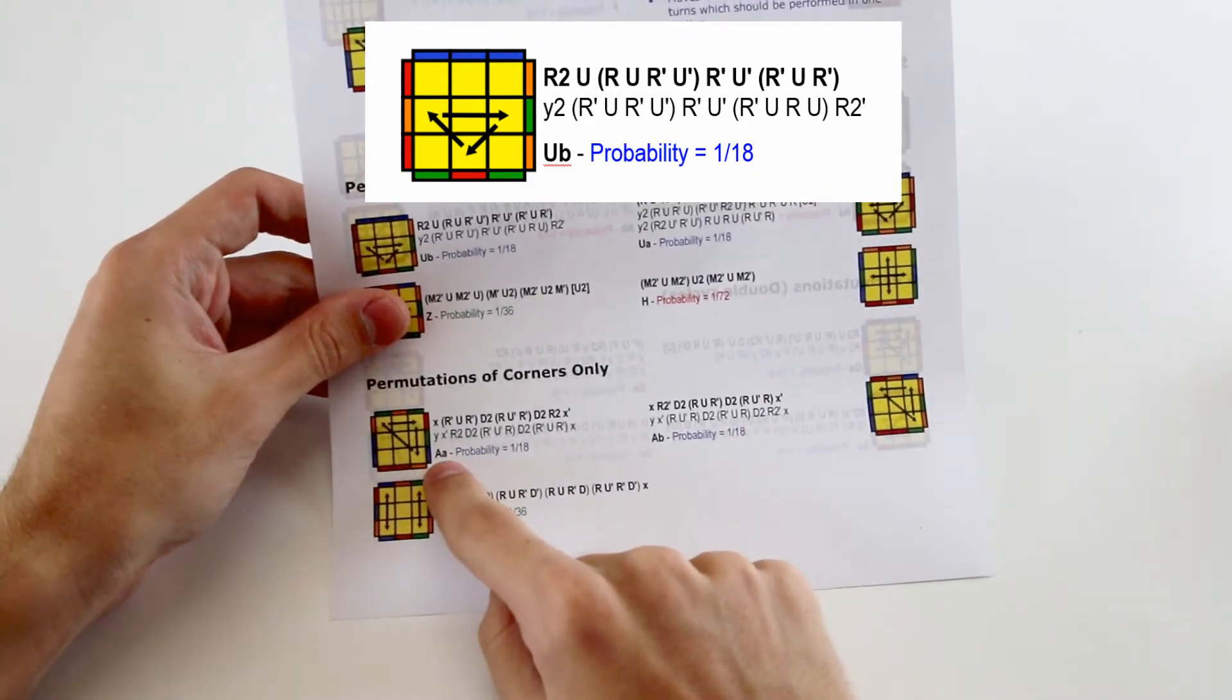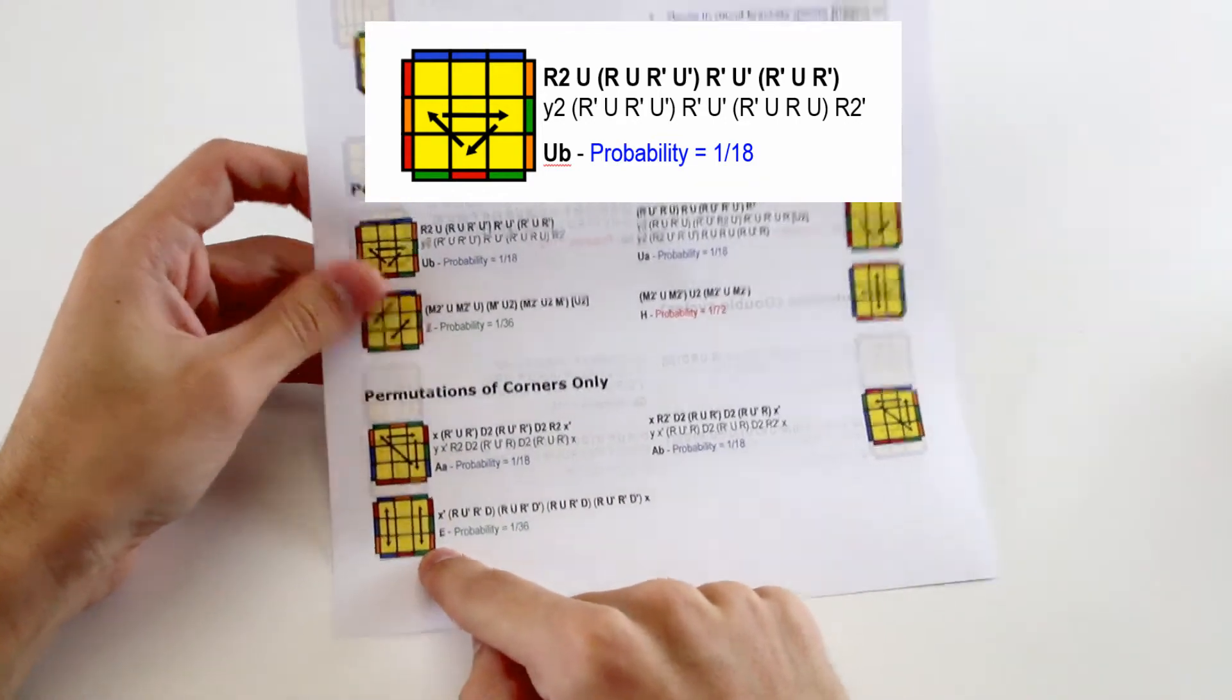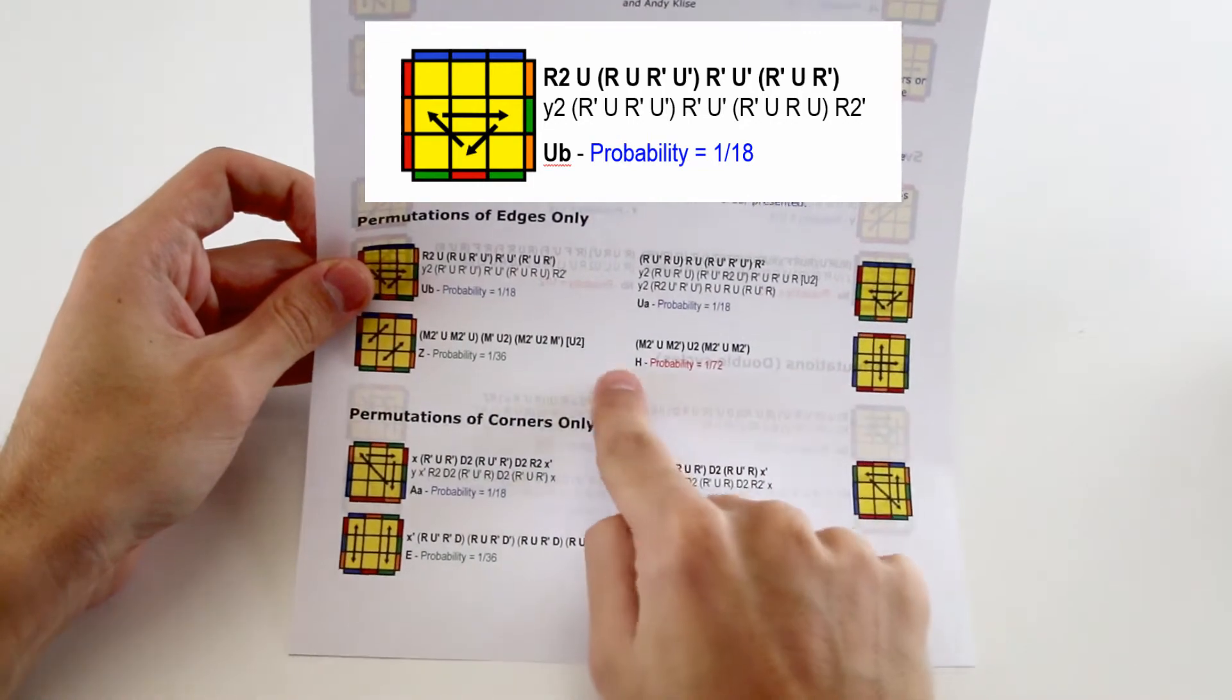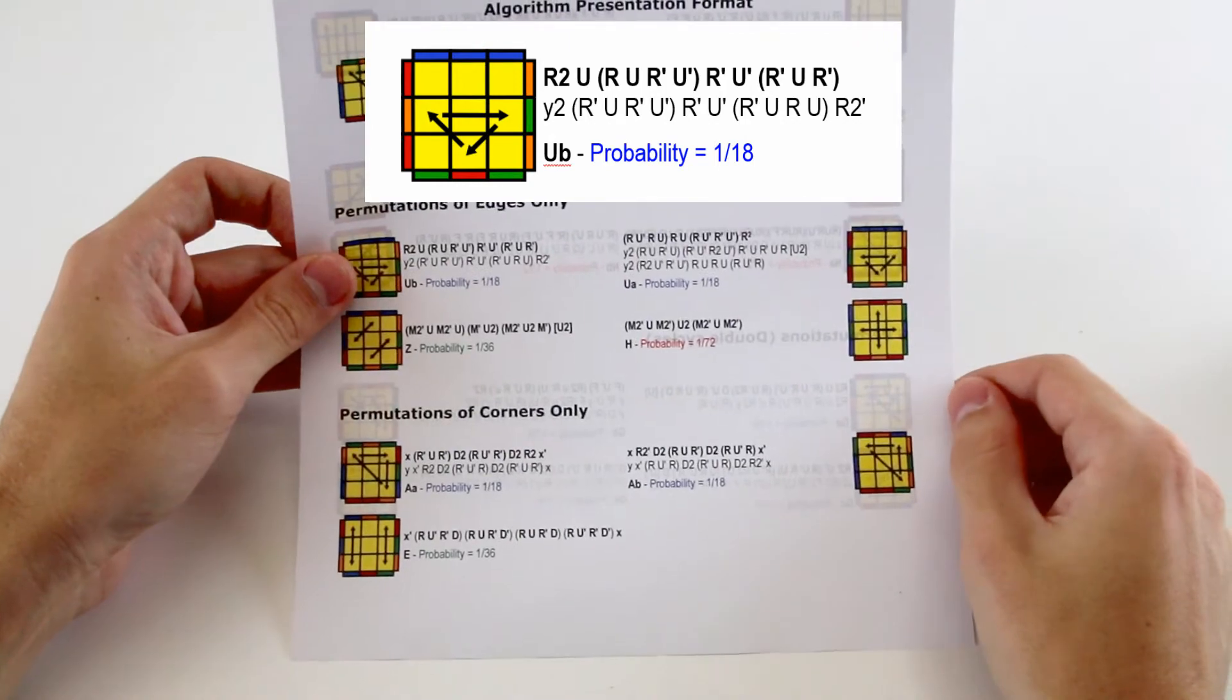Underneath that we have the name of the PLL, which is just a letter. For example, this case is the E permutation, this case is the Z permutation, this case is the H permutation. And then lastly we show the probability of the case occurring in a solve.